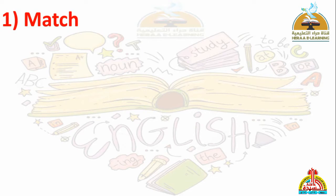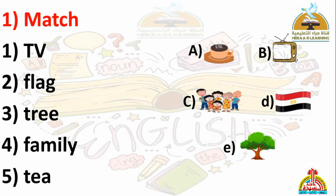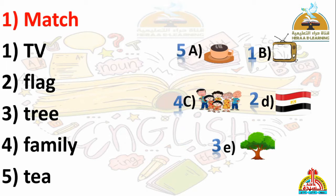Practice. Number one: Match — وصل. Number one: TV — تلفزيون. Match with letter B. Number two: Flag — علم. Match with letter D. Number three: Tree — شجرة. Match with letter E. Number four: Family — عائلة. Match with letter C. Number five: T — شاي. Match with letter A.